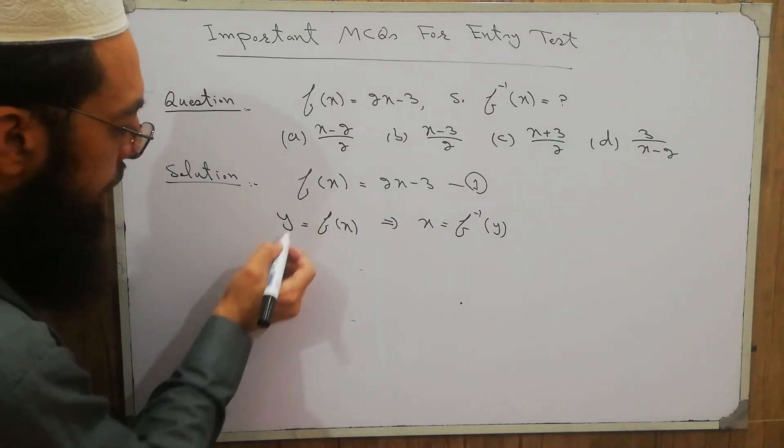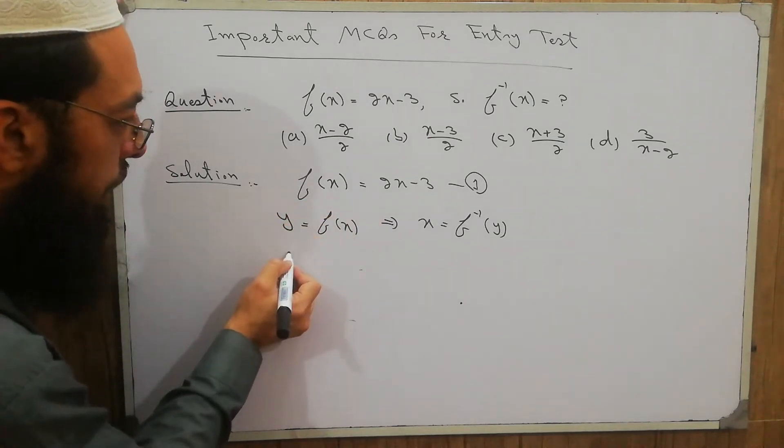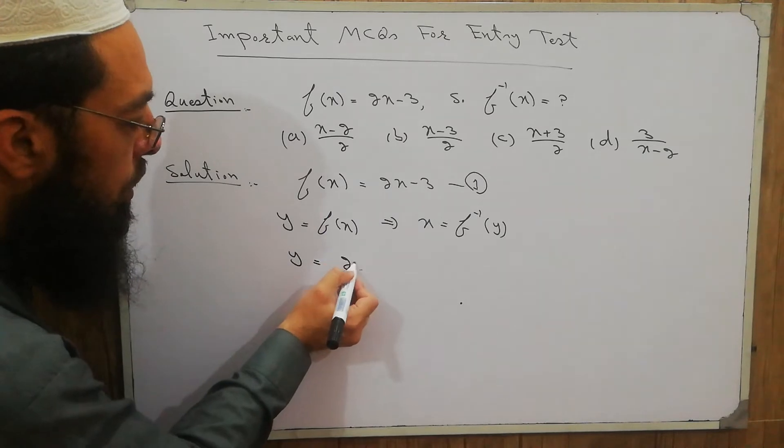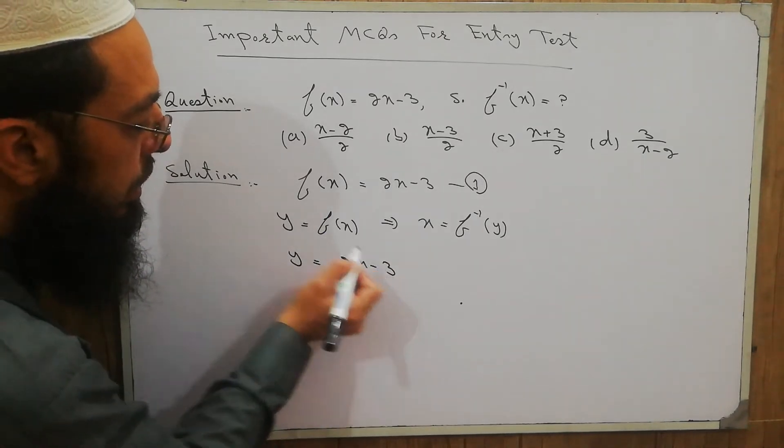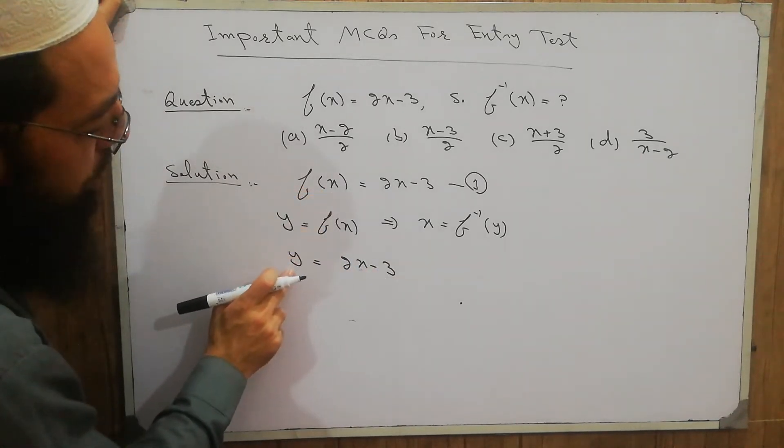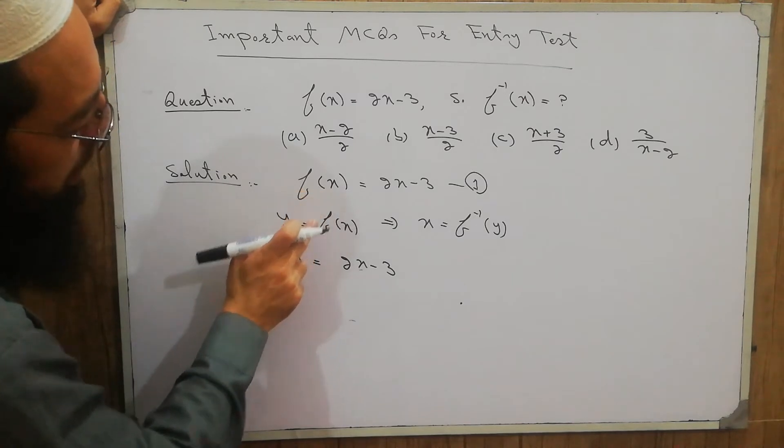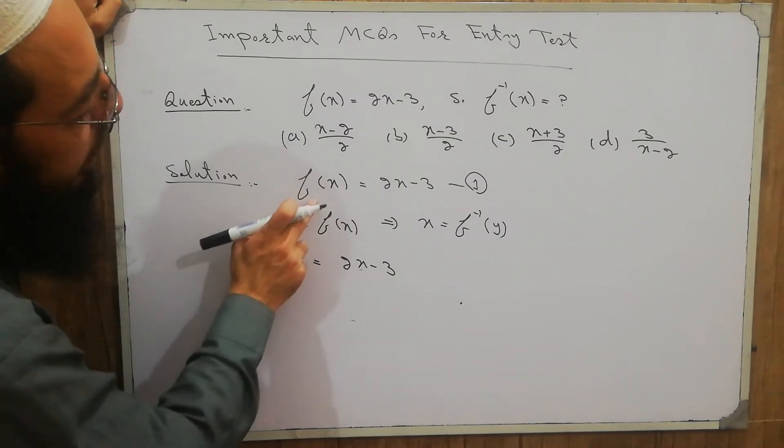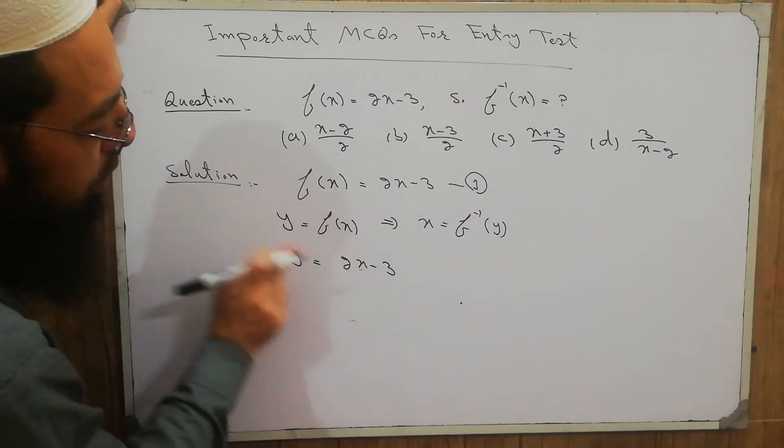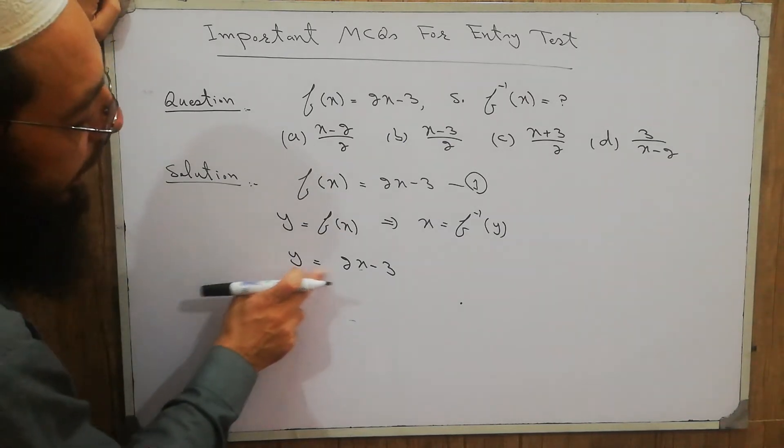So write equation number 1 in the form of y equals 2x minus 3. f of x equals y, so I wrote y in terms of f of x. So y equals 2x minus 3. This is y in terms of x.